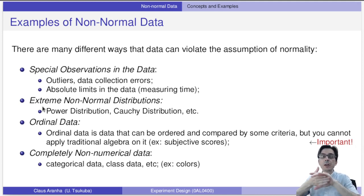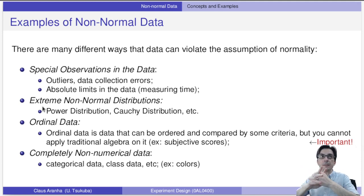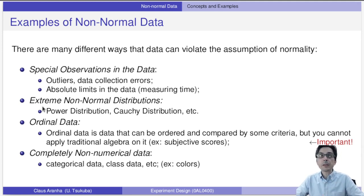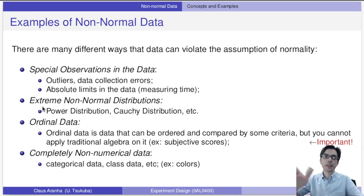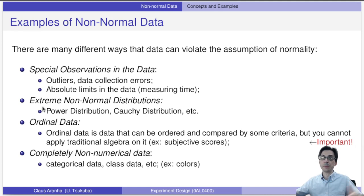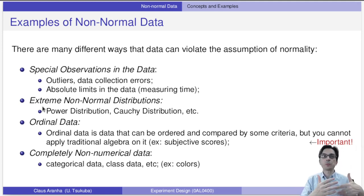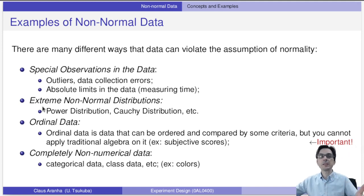Data can violate the assumption of normality due to special observations like outliers or data collection errors, or when there are absolute limits on the data. For example, measuring program runtime: the mean might be one second, but we cannot have minus one or minus two seconds — a program cannot run in negative time. This cuts off one tail of the normal distribution, so the normality assumption does not hold.